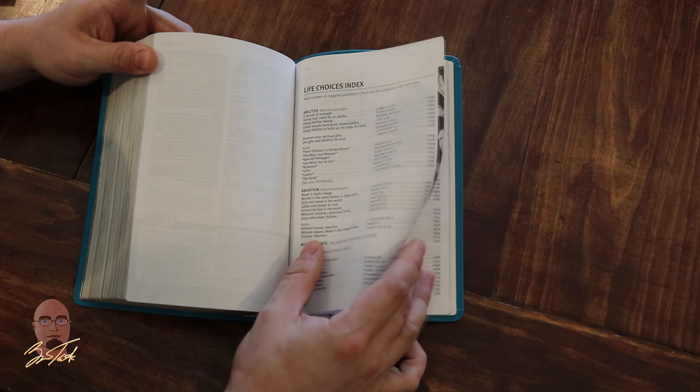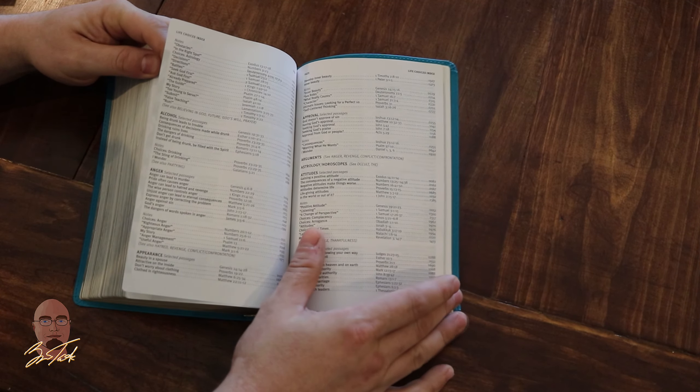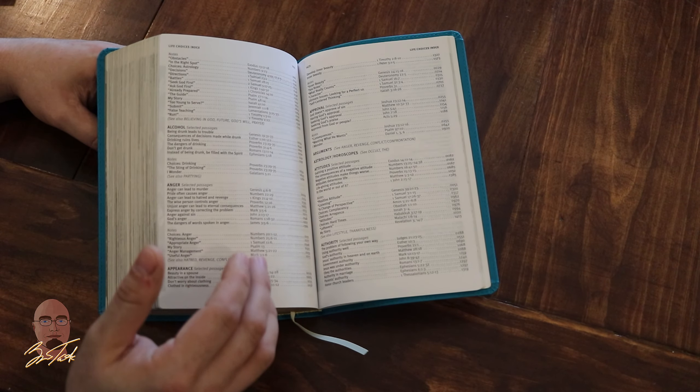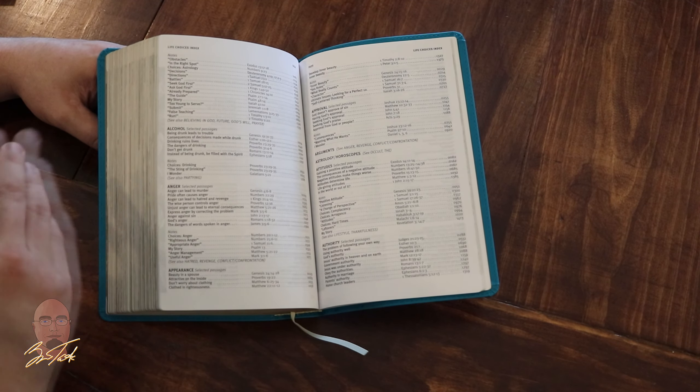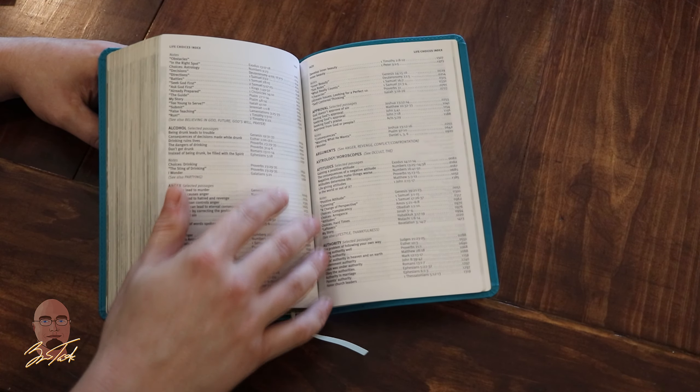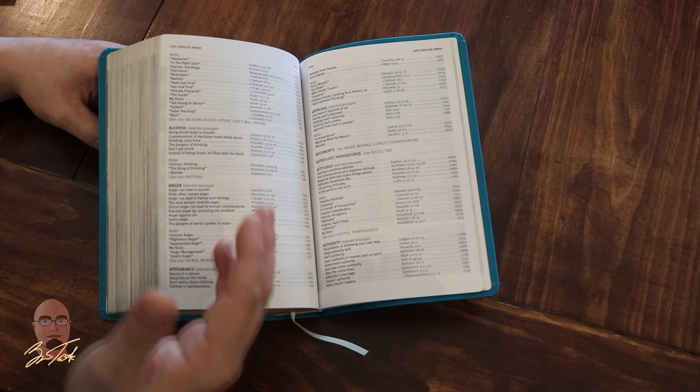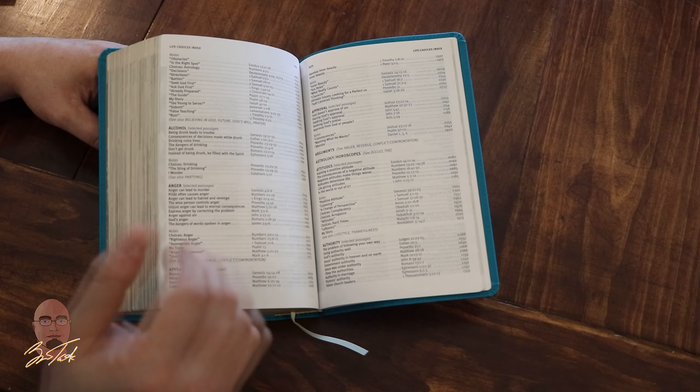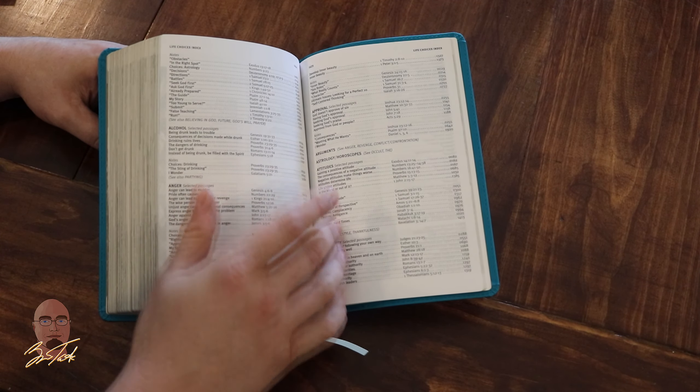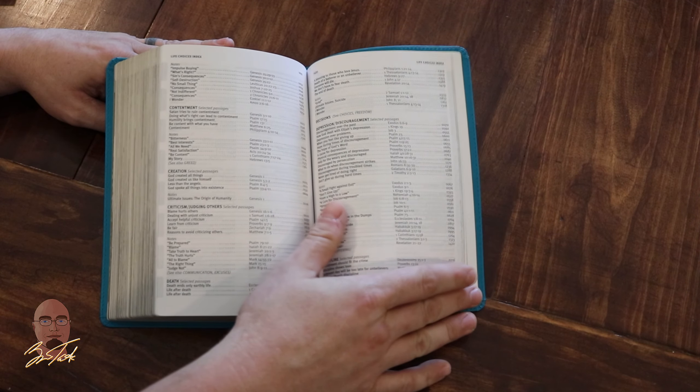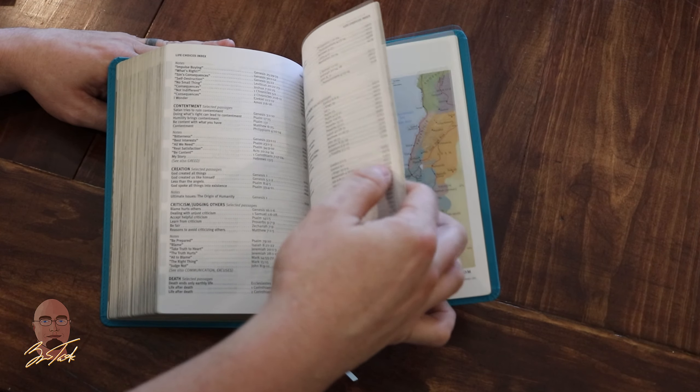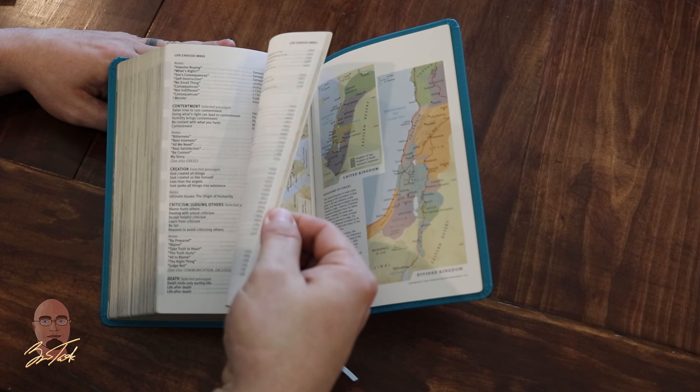These indexes are great; they're so awesome and helpful, but they're in the back. Why aren't these indexes in the front? When kids open the Bible, they have a question about approval; they don't want to open to the back and then back to the front. Put this right around the very beginning sections so that they already know where they can turn to to answer questions. This is the Life Choices Index, and it goes through the life choices.